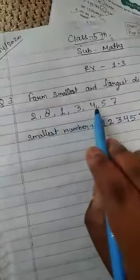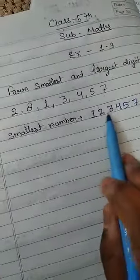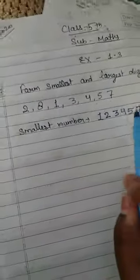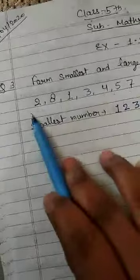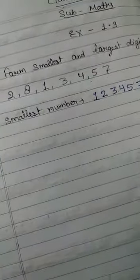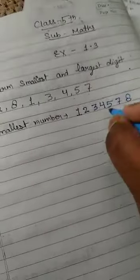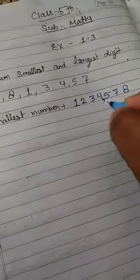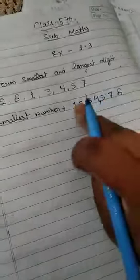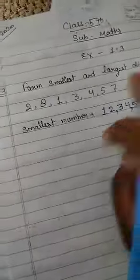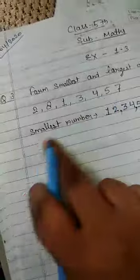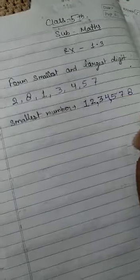We will put the comma here 1, 2, 3 and here 1, 2. This is our smallest number by using these digits. Now we will make the second part, that is the largest number.